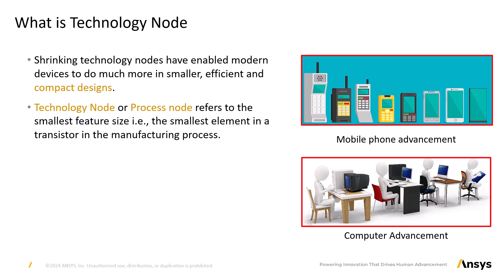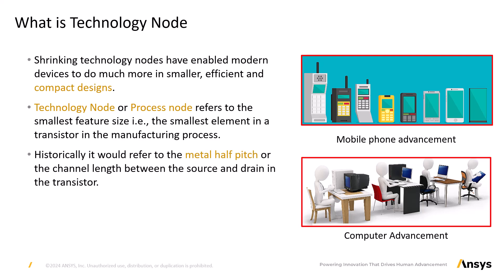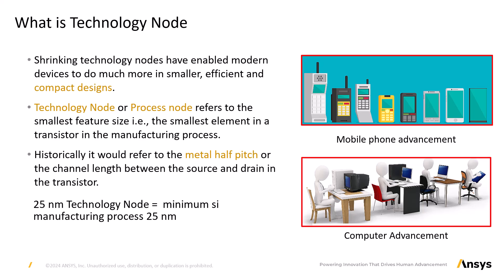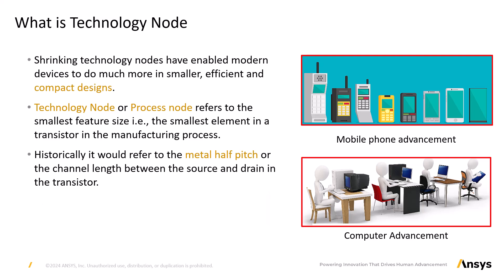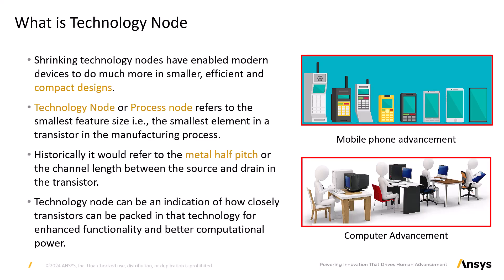A technology node or process node refers to the smallest feature size — the smallest element in a transistor in the manufacturing process. Historically, it would refer to the metal half pitch or the channel length between the source and the drain in a field effect transistor. For example, a 25 nanometer process technology node implies that the minimum feature size in the manufacturing process is 25 nanometers. Modern-day technology nodes indicate how closely transistors can be packed — what we call transistor density — and increased transistor density leads to enhanced functionality and better performance.